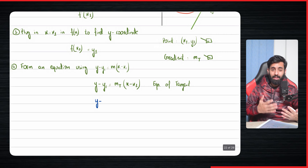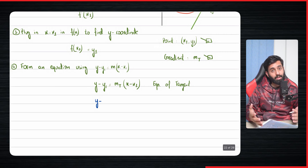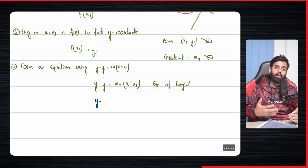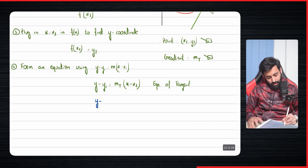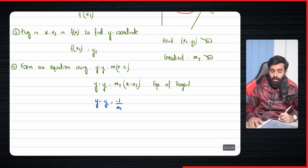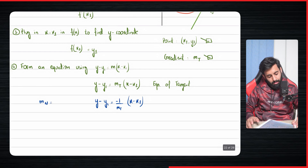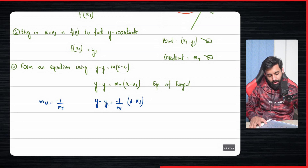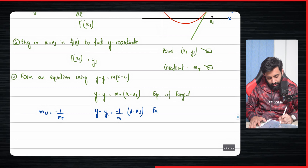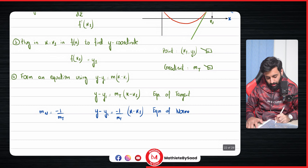To find the gradient of a line perpendicular to another, you take the negative reciprocal. So using y − y1 = m(x − x1), the gradient of the normal m_n equals −1 over the gradient of the tangent. This gives you the equation of the normal.